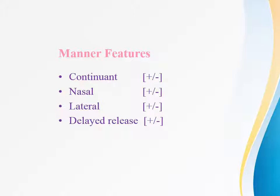Next is lateral. This feature describes the shape and positioning of the tongue with respect to the oral tract. Plus lateral segments are produced as the center of the tongue rises to contact the roof of the mouth, thereby blocking air from flowing centrally through the oral tract and instead forcing more lateral flow along the lower sides of the tongue. Next is delayed release. This feature distinguishes stops from affricates. Affricates are designated plus delayed release.